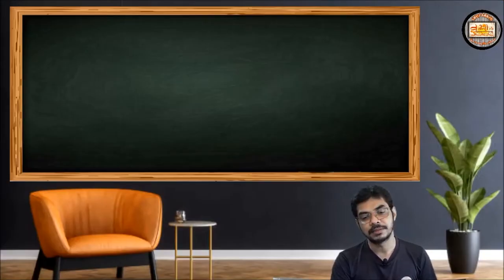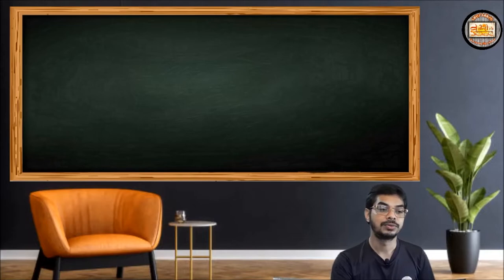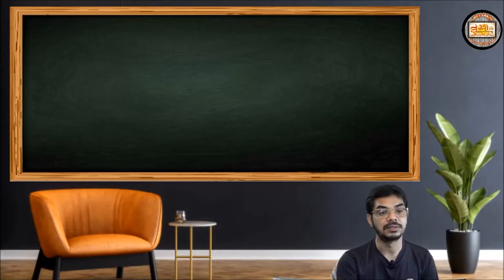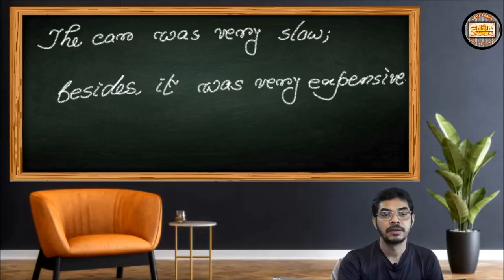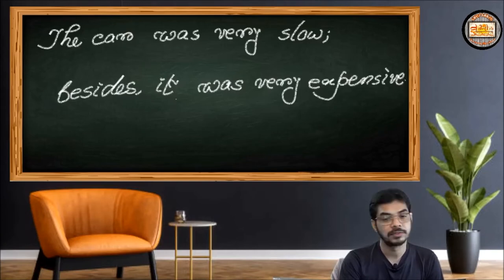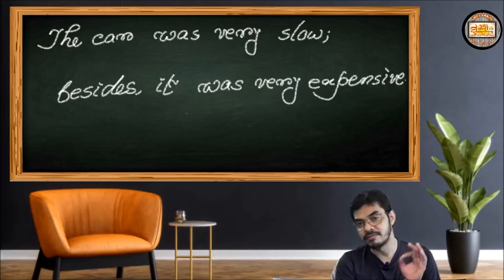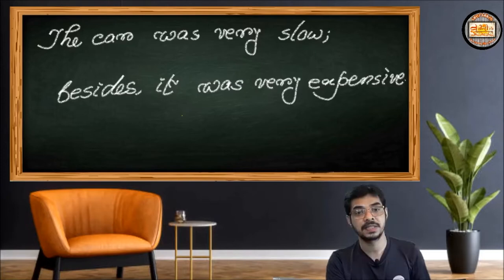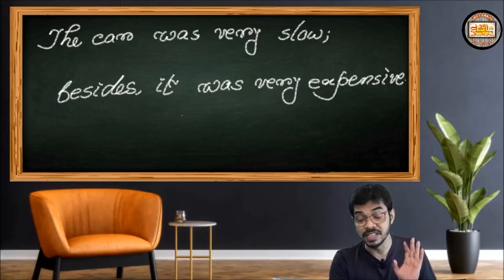So before we start, it's better for us to go to a particular sentence and begin our discussion with it. This is the sentence: 'The car was very slow; besides, it was very expensive.' I would like you to read the sentence properly and very carefully. The car was very slow.